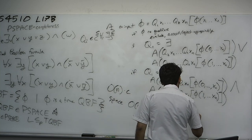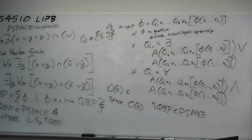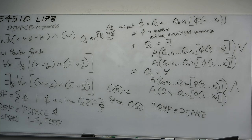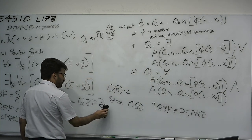For NP-complete reductions, proving a problem is in NP is easy because you can guess non-deterministically. We don't have a similar logical analog for PSPACE. So coming up with a polynomial space algorithm for a PSPACE-complete problem is actually not trivial — you couldn't just wave your wand about this one.